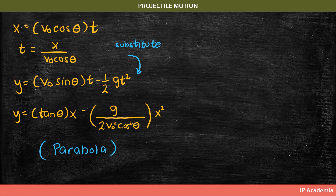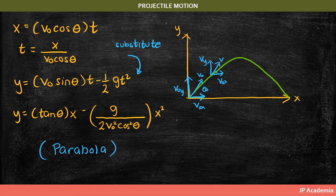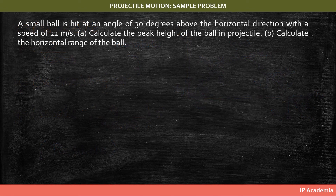One important feature of projectile motion is that the horizontal component of the motion is independent of the vertical motion, as shown in the graph. We have constant speed along the horizontal given that air resistance is negligible, while we have varying vertical speed due to acceleration g. Note that at the peak, vy equals zero, so we only have v0x as the velocity vector.